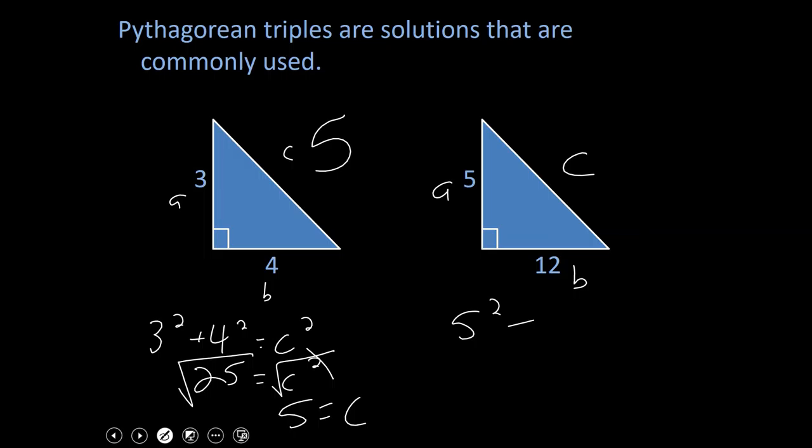If we set this up, we're talking five squared plus 12 squared equals C squared. Five squared is 25. 12 squared is 144. That's going to make 169 equal to C squared. Again, your square root, square root, that makes 13 equal to C, making our hypotenuse 13.